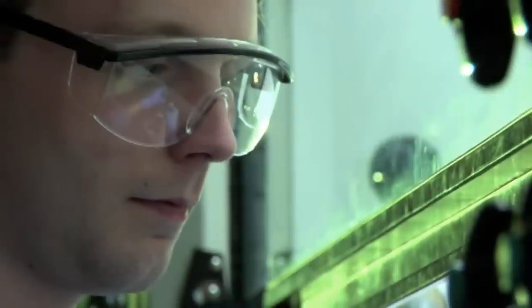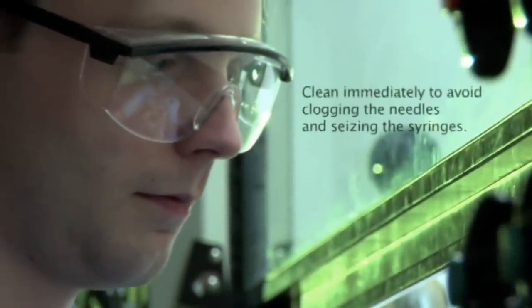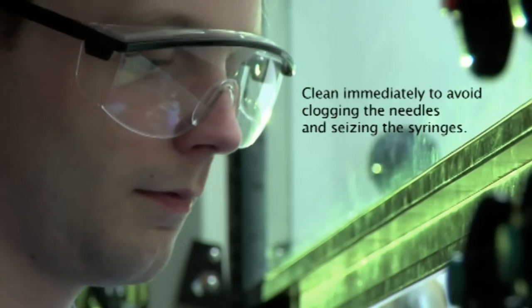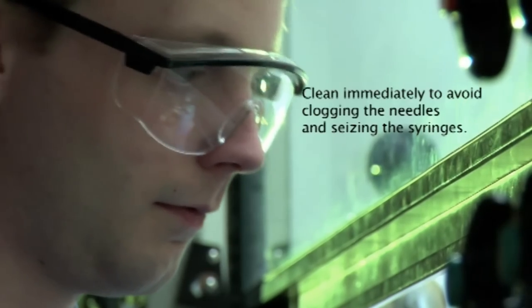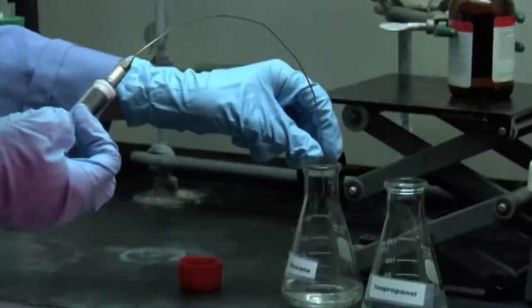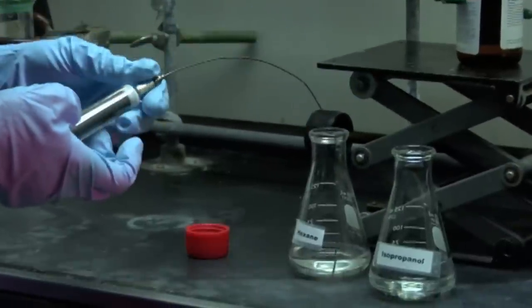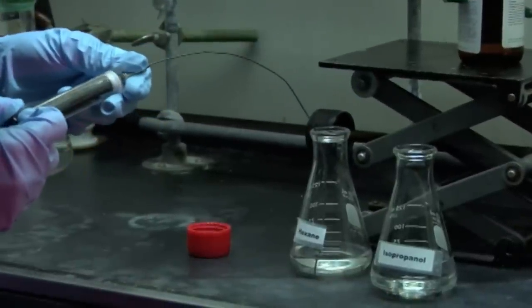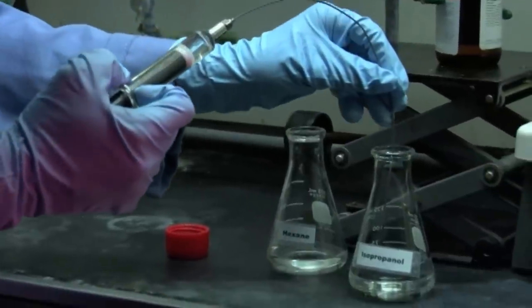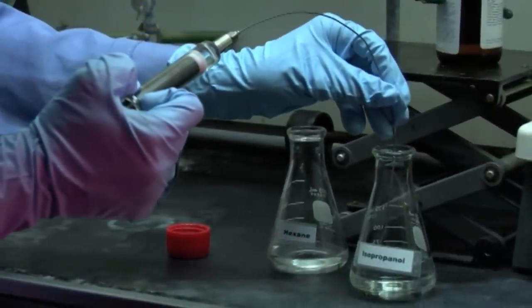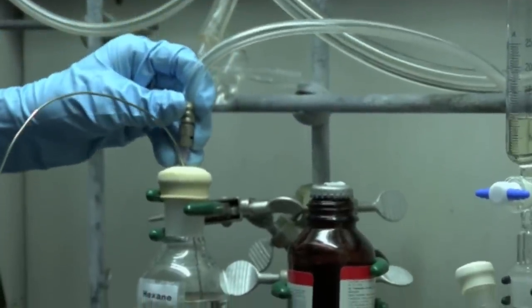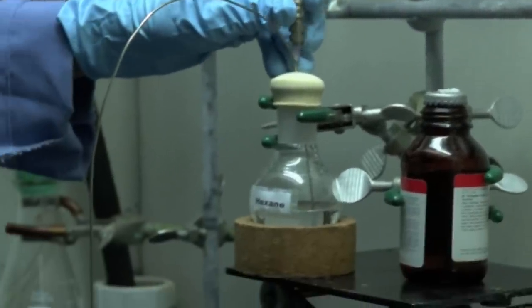Now that Dustin has completed the transfer of the pyrophoric reagent, he must clean the reagent from the needles and syringes. This must be done immediately to avoid clogging the needles and seizing the syringes. In order to do this, Dustin will draw hexane into the syringe still containing small amounts of the pyrophoric reagent. He will then discharge the diluted solution into isopropanol. Similarly, he will flush the double tip needles with hexane and then quench the hexane wash in isopropanol.